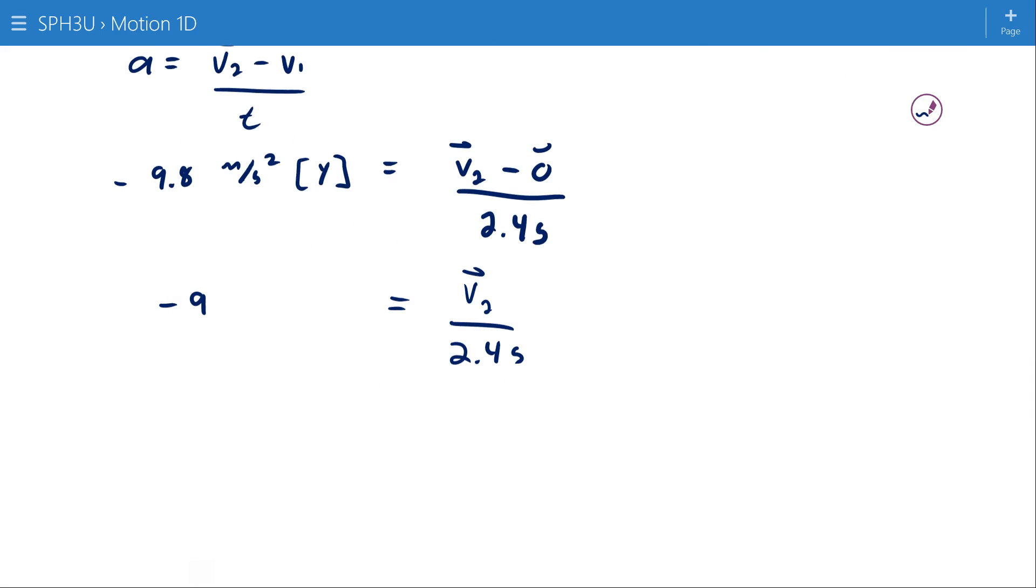Negative 9.8 meters per second squared up. So, v2... I'll multiply both sides by 2.4.